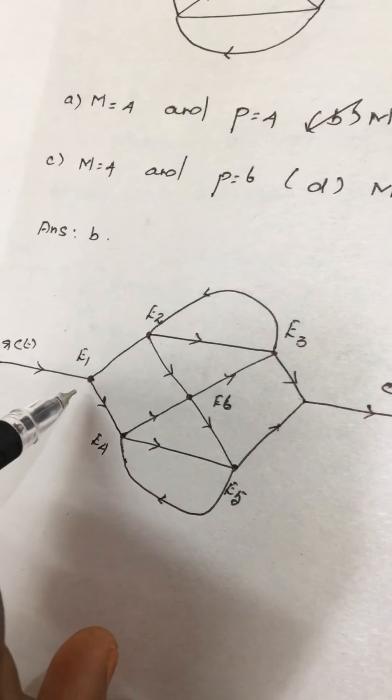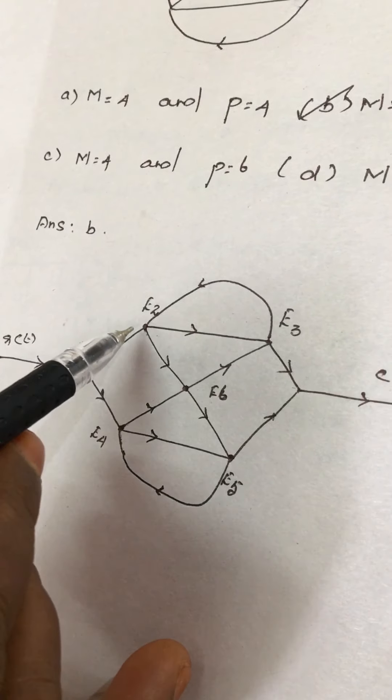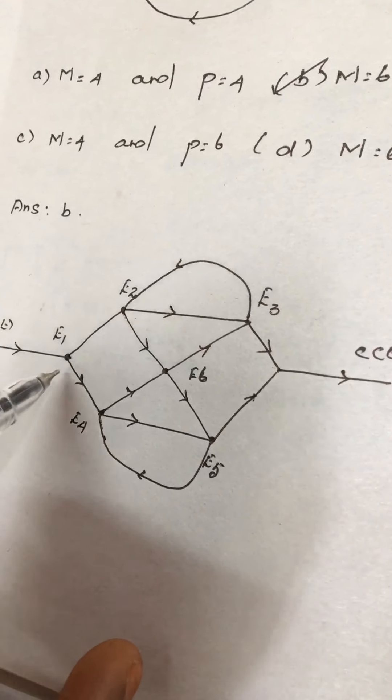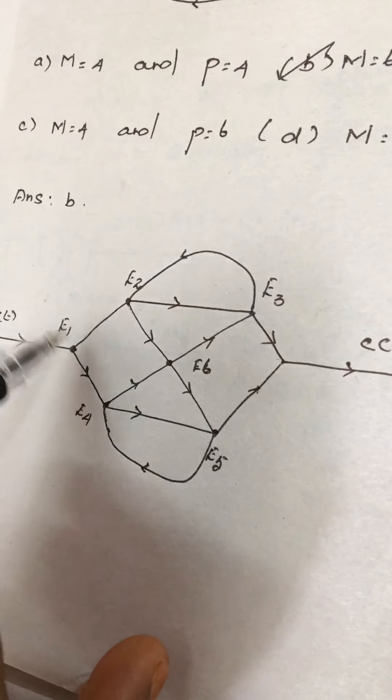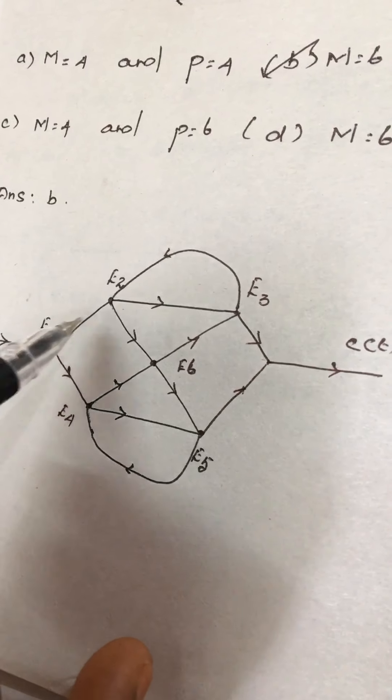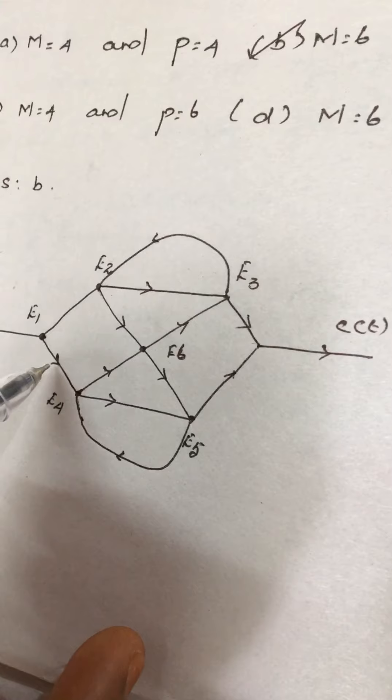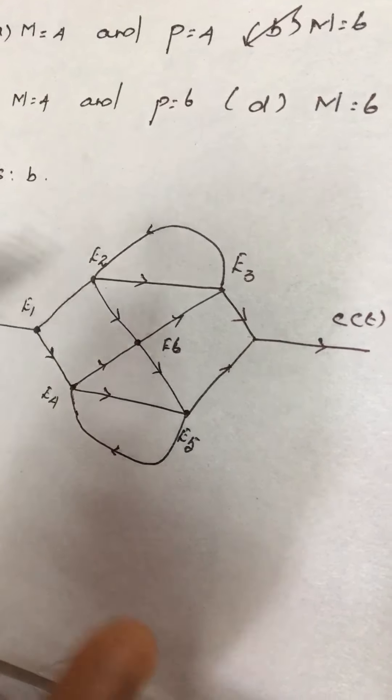What is a node? A node is nothing but the point at which the branches are connected together. Here this is one node in which this branch, this branch, and this branch are connected together.